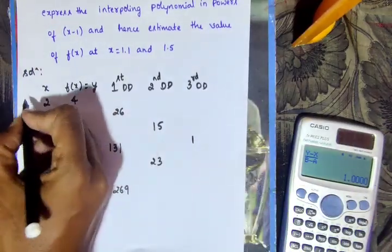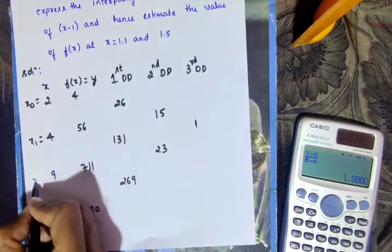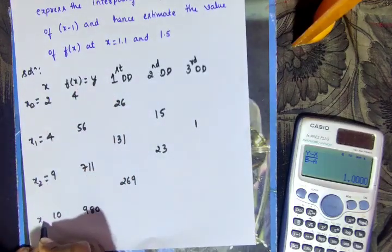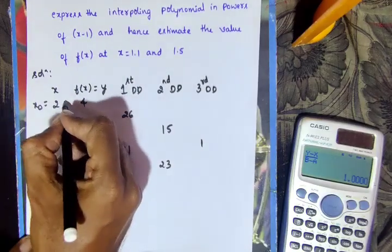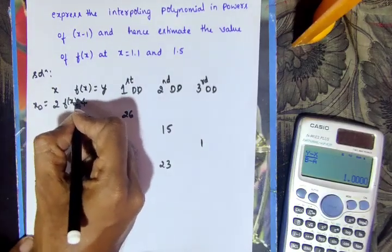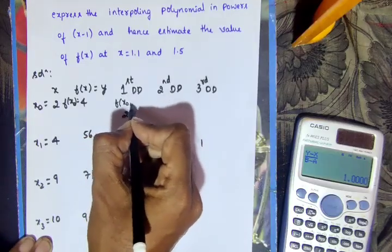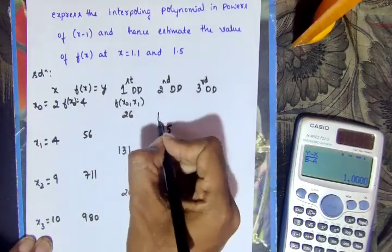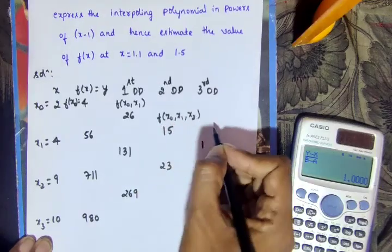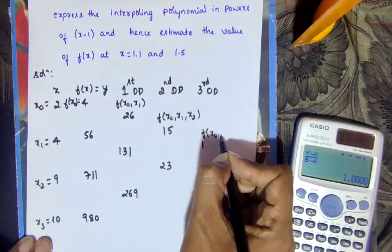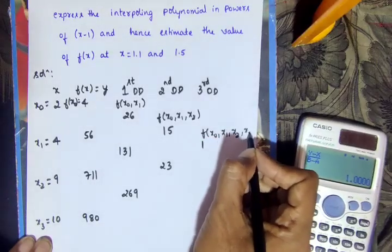Labeling the nodes: this is x0, x1, x2, x3. The divided difference table entries correspond to: x0, x1 for the first level; x1, x2 for the next; and x0, x1, x2, x3 for the full table.